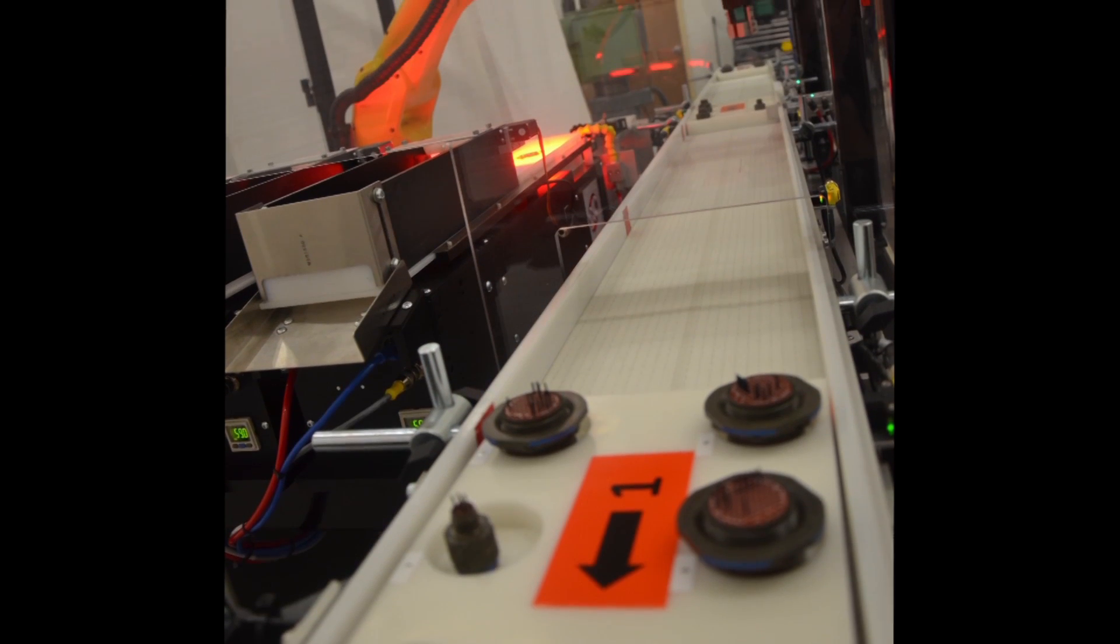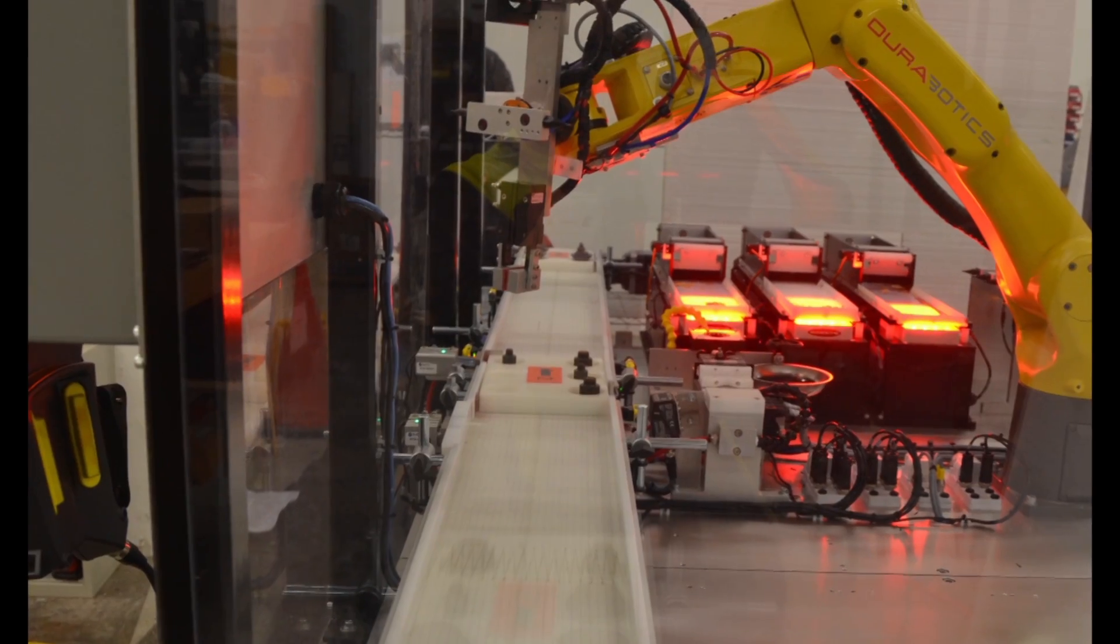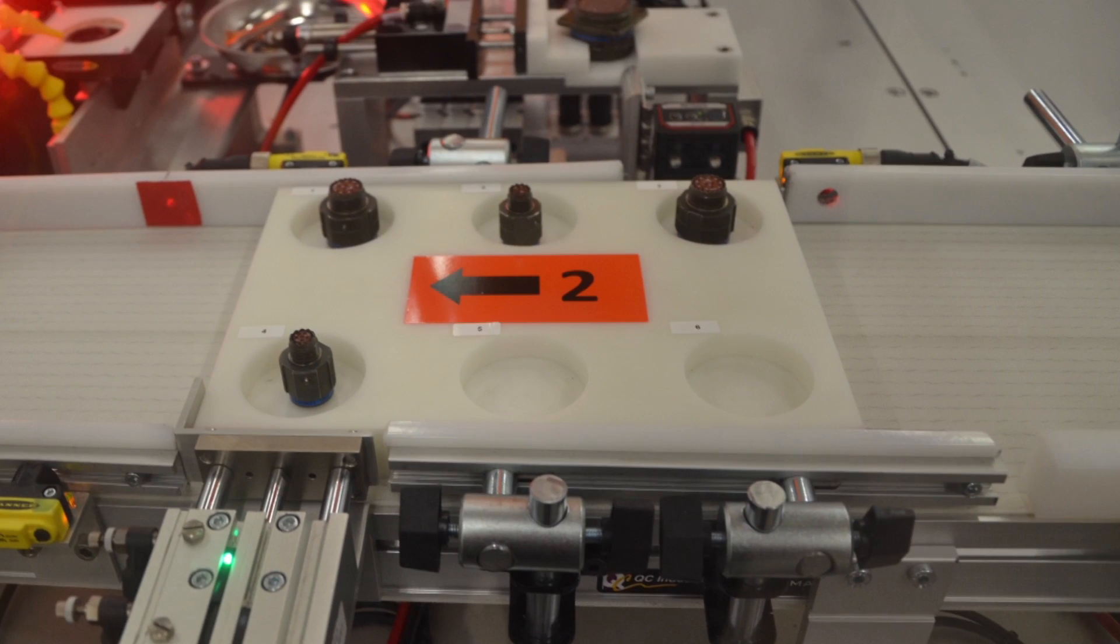Each pallet contains a barcode that the robotic system reads and queries a database to determine which connector styles and sizes are in the particular pallet. It also determines the recipe combination of contacts and seal plugs for each connector in the pallet.